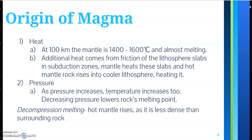The first is heat. At 100 kilometers, the mantle is between 1400 and 1600 degrees Celsius and is almost melting. Additional heat comes from the friction of the lithosphere slabs and subduction zones. The mantle heats these slabs and hot mantle rock rises into the cooler lithosphere, heating it up.